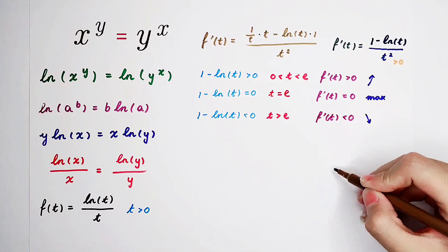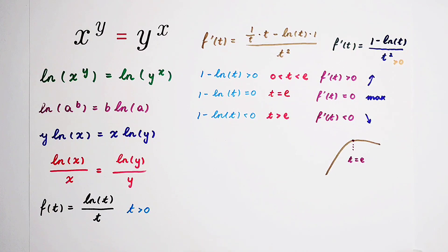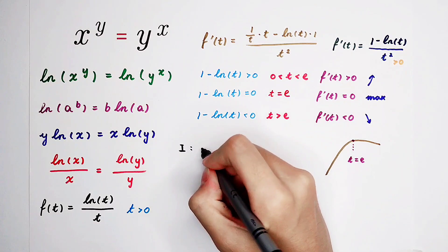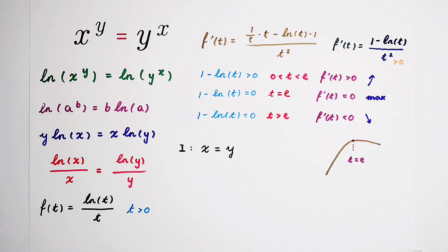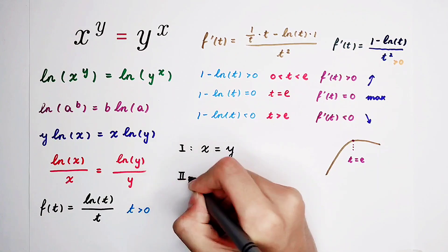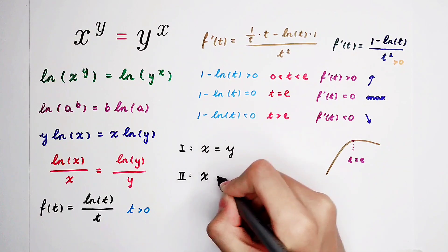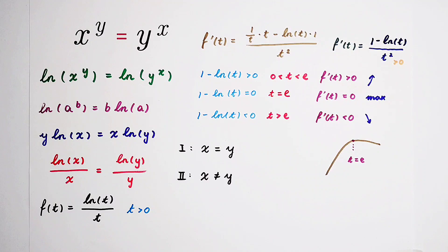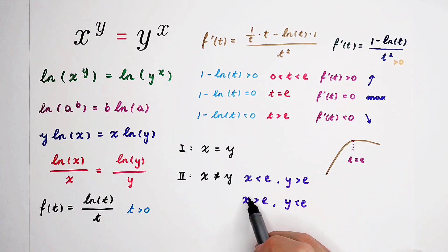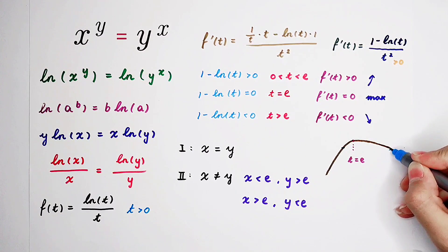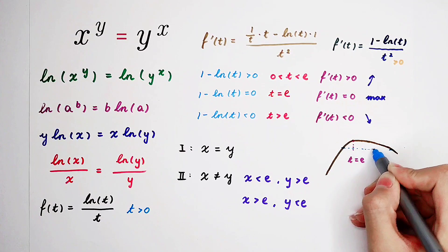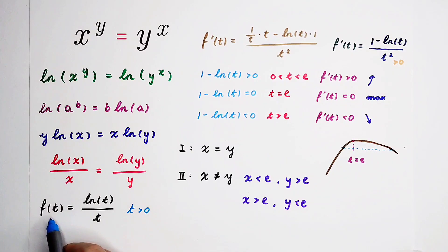The graph looks like this. We have two kinds of solutions. The first kind: if x equals y, the equation holds — of course it holds. The second kind: if x is not equal to y, the equation can also hold. In this case, x is less than e and y is greater than e, or x is greater than e and y is less than e. For example, x is here and y is here — they have the same f value, because f(x) equals f(y).